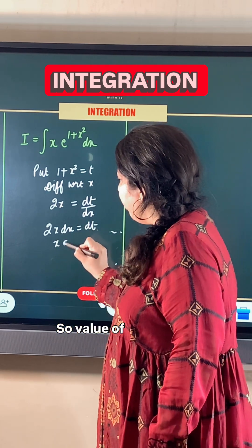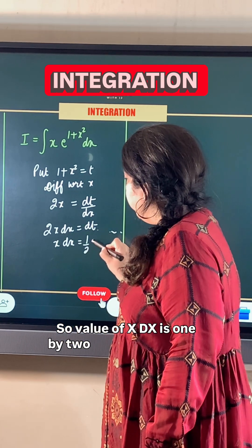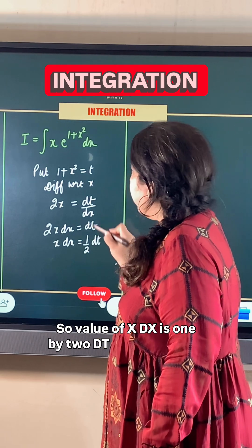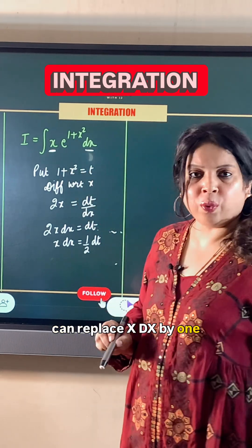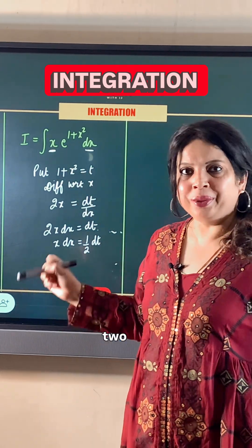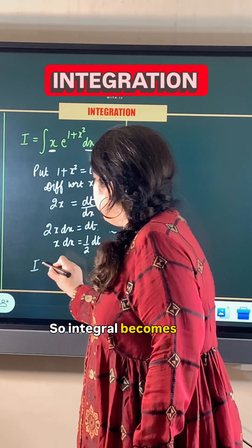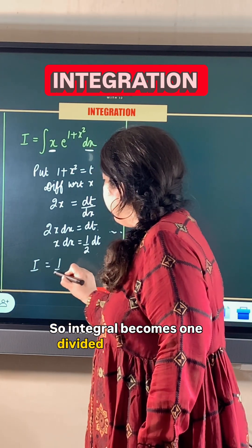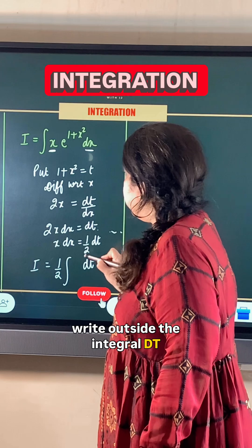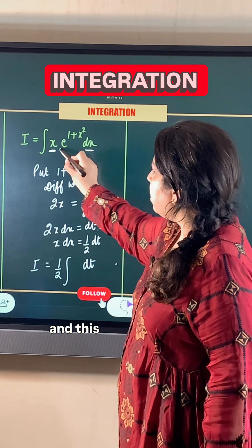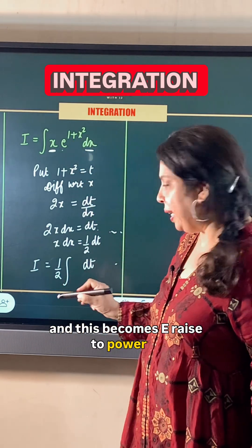The value of x dx is 1 by 2 dt. That means we can replace x dx by 1 upon 2 dt. So the integral becomes 1 divided by 2, written outside the integral, multiplied by e raised to the power t dt.